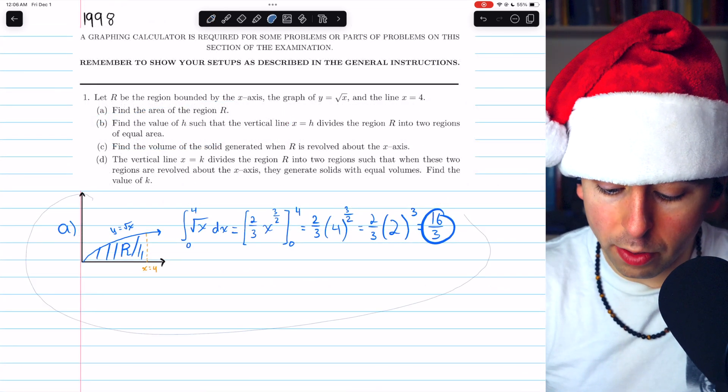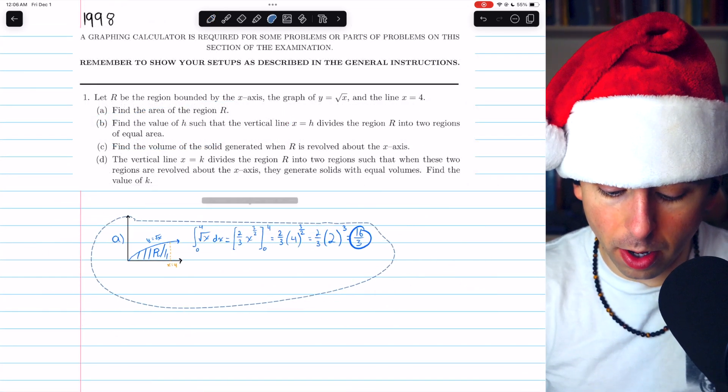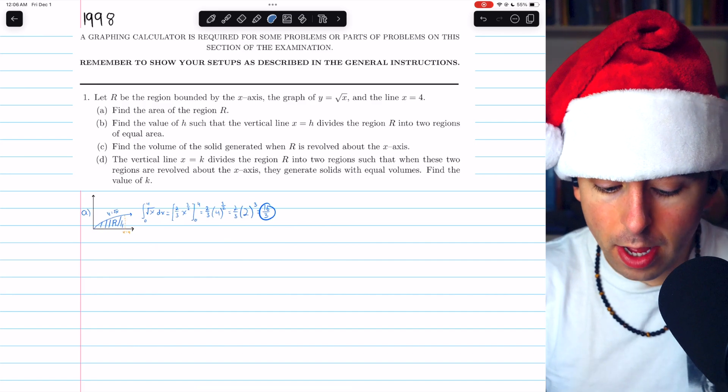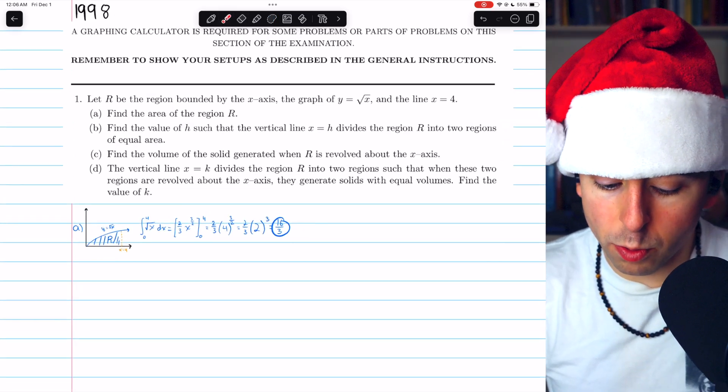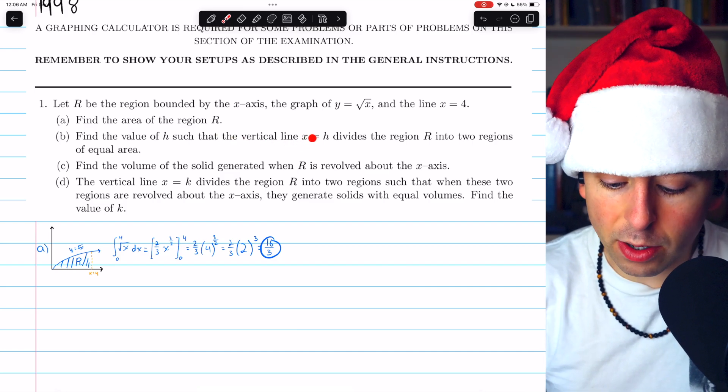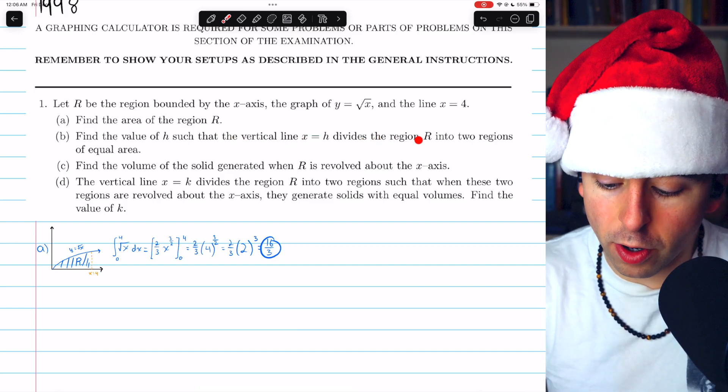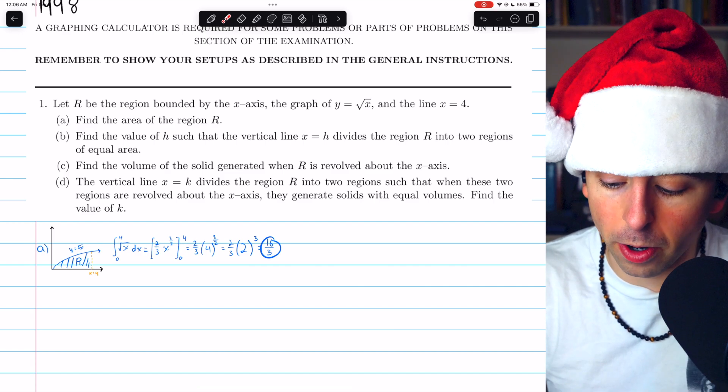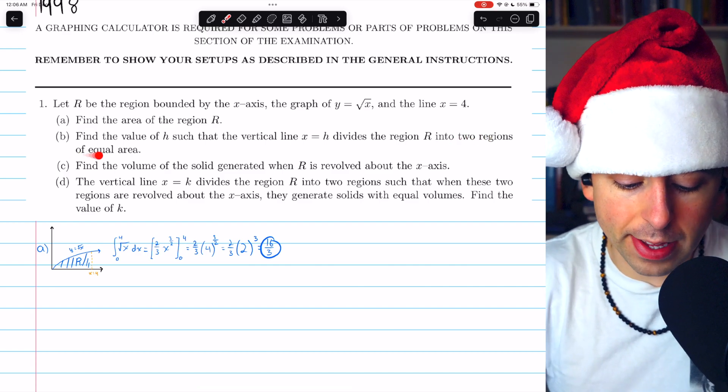I'm going to shrink our work for part A, and then we're going to move on to part B. Part B says that we are to find the value of H such that the vertical line X equals H divides the region R, so the same region as before, into two regions of equal area.